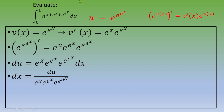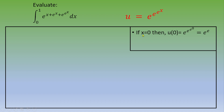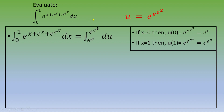Now we focus on transforming the two limits, which were zero and one. If x equals zero, we plug zero in, and e to the e to the e to the zero equals e to the e to one, which equals e to the e. If x equals one, we plug one in and get e to the e to the e.